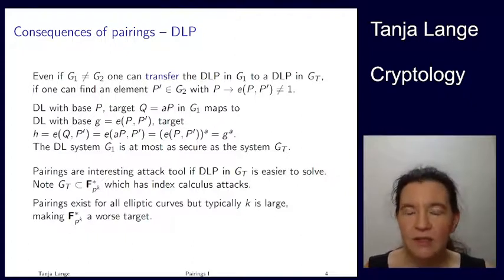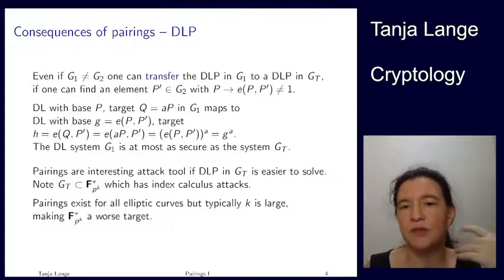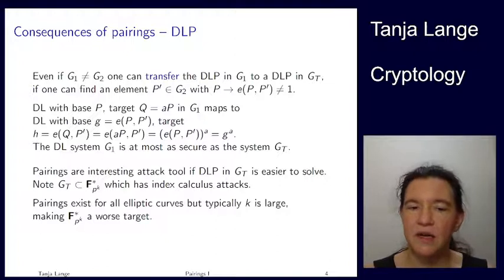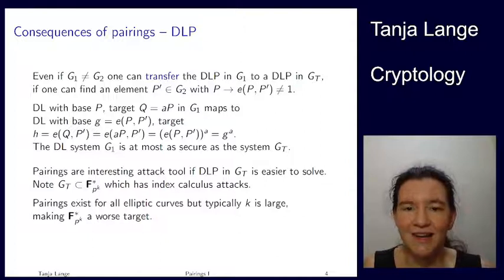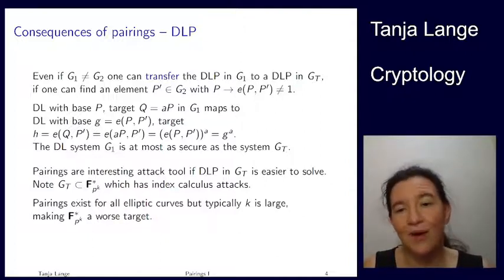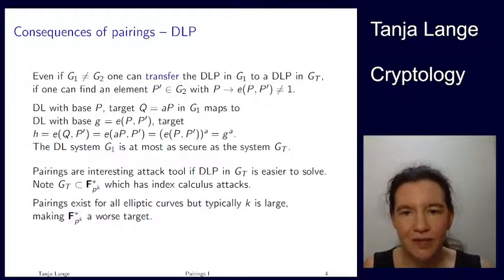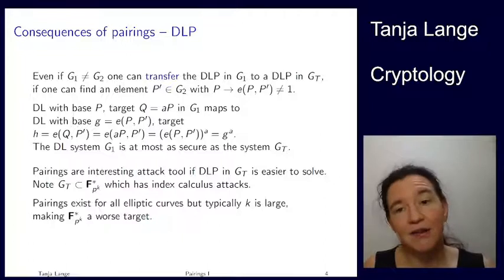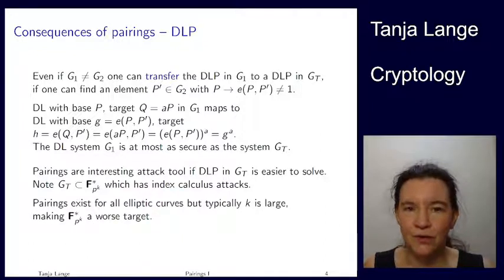So pairings always exist, but typically this k is large, because k is the order of p mod L. So typically this finite field Fp to the k star, that group is a much worse target. But what we're looking at here are interesting cases where we actually can compute the pairing, and so for those, next lecture we're going to see some constructive applications, and then we're going to finish off basically the security story for elliptic curves, and see what kind of curves are scary, or what kind of curves we can use for constructions.